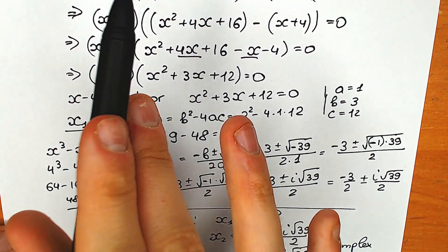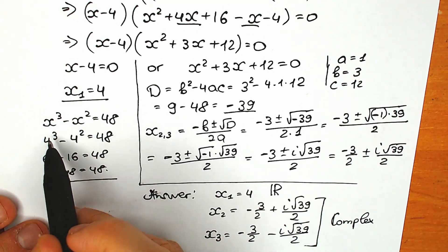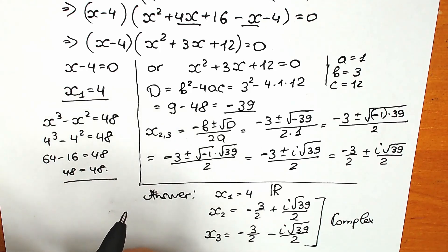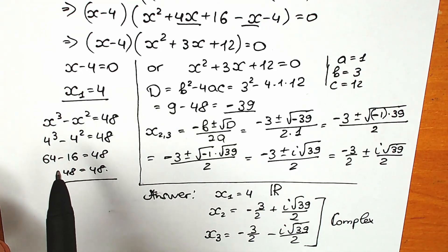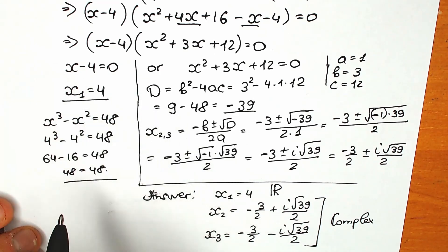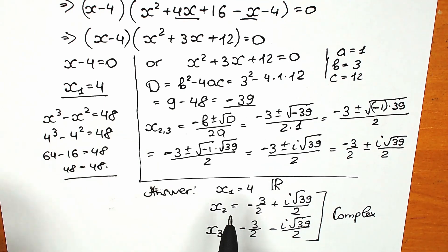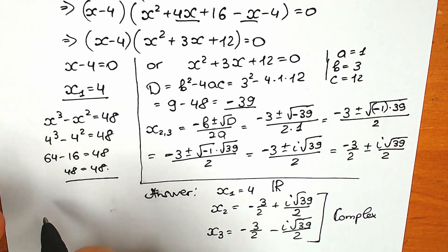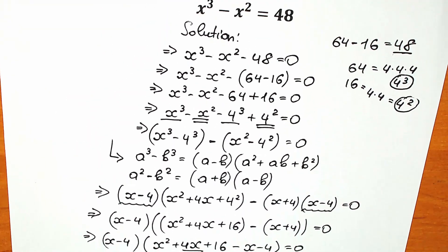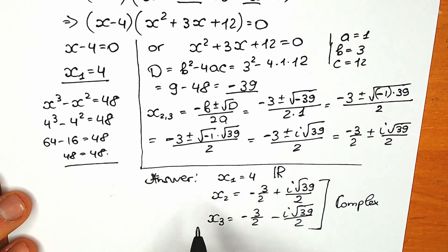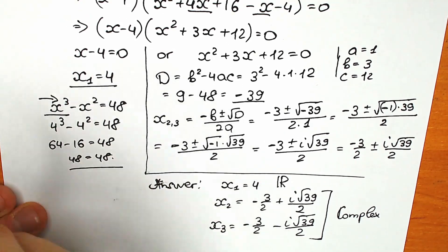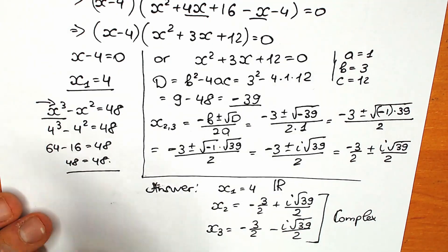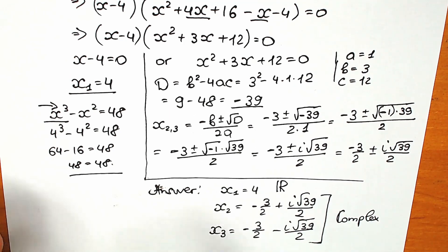A lot of students ask me why I showed this full method — we can easily guess in a few seconds that x equals 4. I agree, but if you want to solve only in terms of real numbers that's up to you. However, I recommend solving completely, because with only the inspection method there is no way you will find the complex roots. That's a really bad approach. According to the fundamental theorem of algebra, when we have the third power we have at least three roots — in our case one real root and two complex roots.